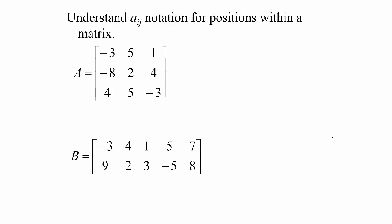First is the notation for entries in a matrix. We write a subscript on a lowercase letter that corresponds with the capital letter of the matrix's name. The first number means the row position and the second number means the column position.